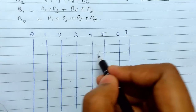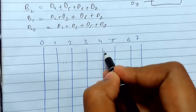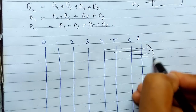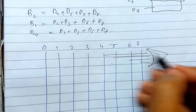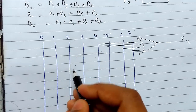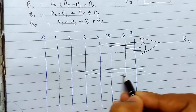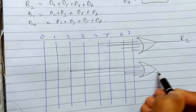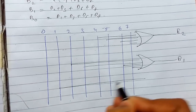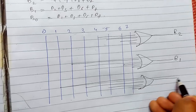Now I will show the logic diagram for it. For b2, the inputs were d4 through d7, so we pass them through an OR gate — this gives you b2. For b1 it was d2, d3, d6, and d7 through an OR gate giving b1, and for b0 it was d1, d3, d5, and d7 through an OR gate giving b0.